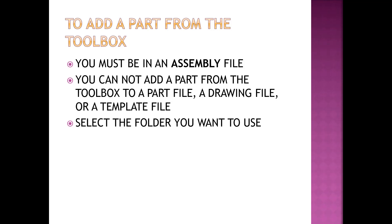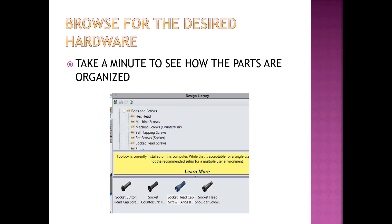To add a part from the toolbox, you must be in an assembly file. You cannot add a part from the toolbox to a part file, a drawing file, or a template file. If you accidentally try to open a part from the toolbox and you're not in an assembly file, it opens the file for that toolbox part, which a lot of people find confusing. Select the folder you want to use and browse for the desired hardware. It's a good idea to browse through the toolbox to see how the parts are organized — it's a fairly complete library of hardware.